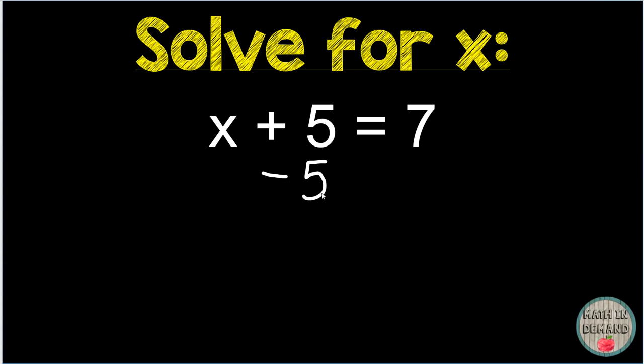Think of a balance beam. Whatever we do on one side of the equation, we need to do on the other side of the equation. So I am also going to subtract 5. Positive 5 and negative 5 cancel. 7 minus 5 will give me 2. Now I am going to bring down my x, bring down the equals, and bring down 2.